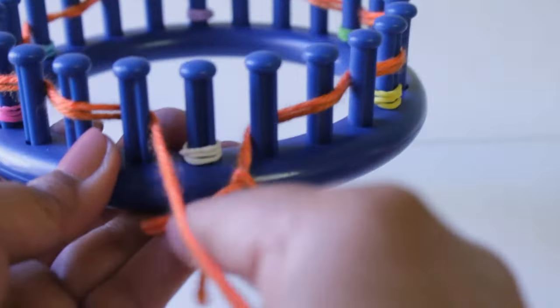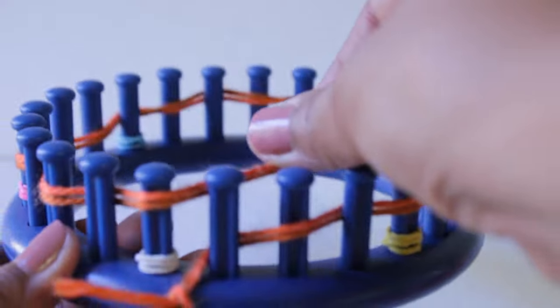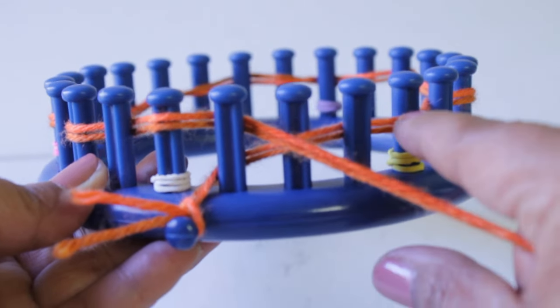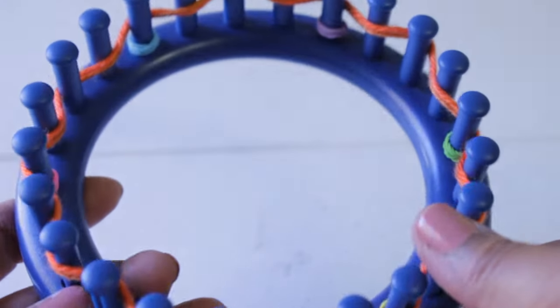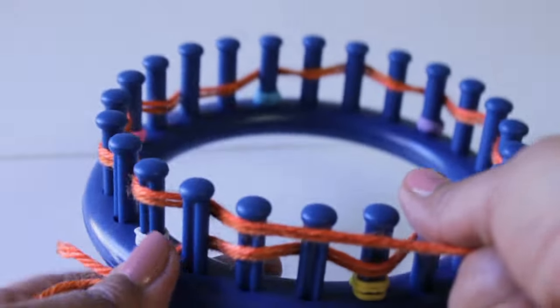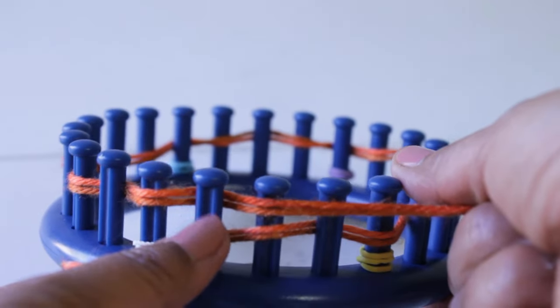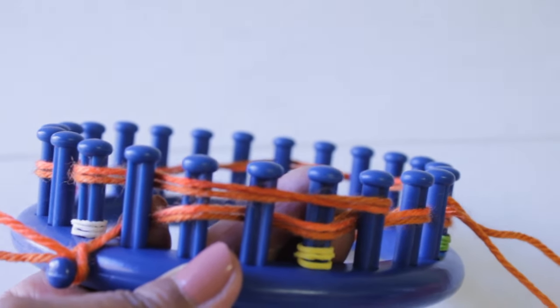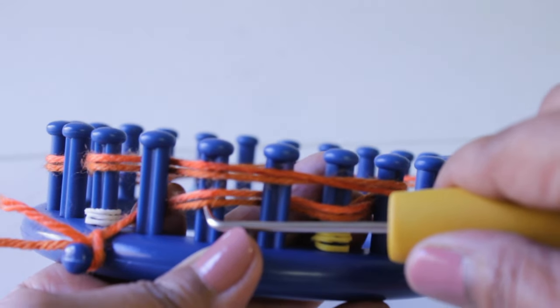When you get back to the front of the loom, you're gonna take the working yarn and go behind peg one and lay it loosely over the next few pegs. You can see how the working yarn went in and out and peg one is empty. So you're gonna take your hook and you're going to knit off every peg that has two loops.